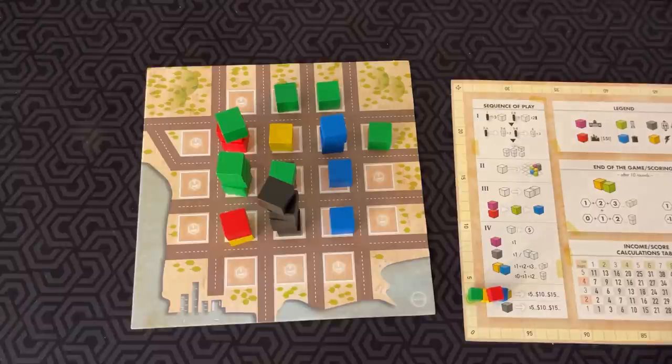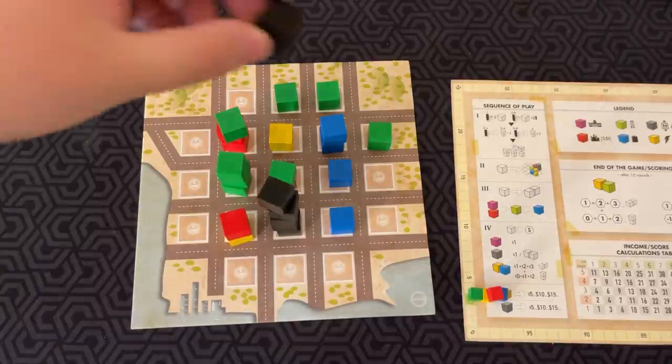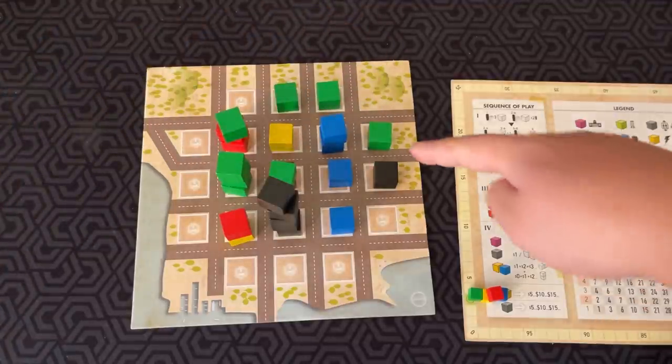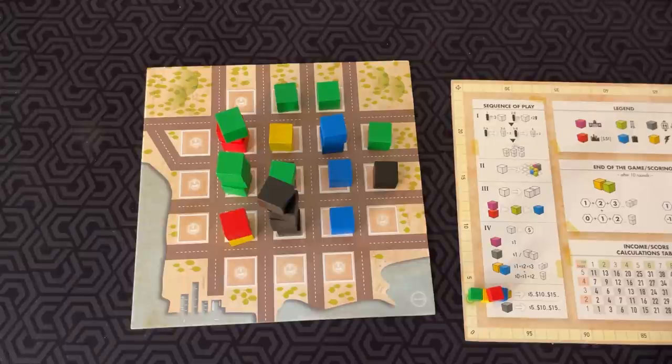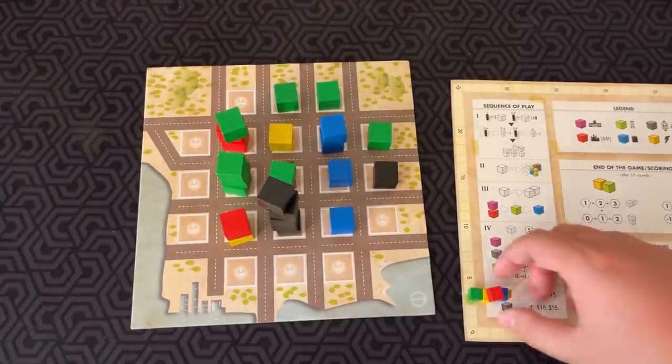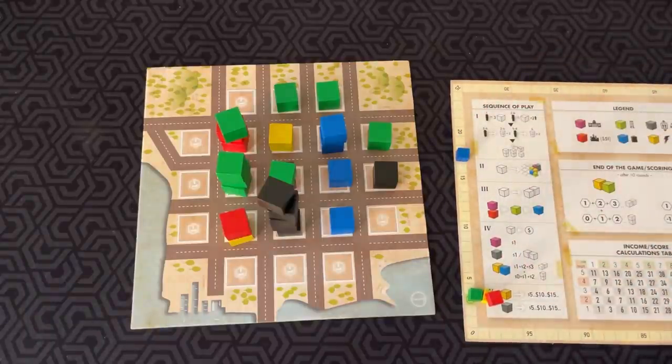Each player earns income based on their commercial units. They also get money from parking lots. For a parking lot, you count how many are adjacent to it orthogonally. In this case, it would generate two dollars. And then the town generates one dollar for itself, just in general. Count up all that income and you would move up in income.